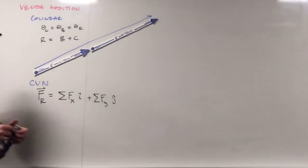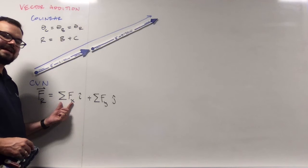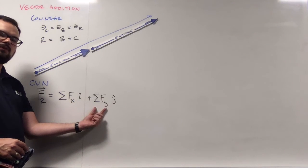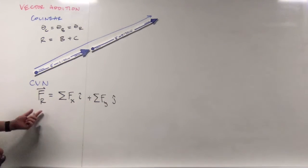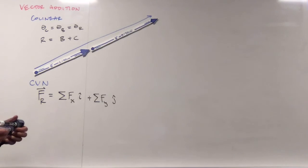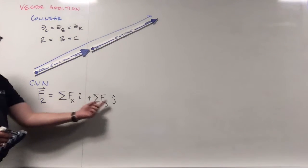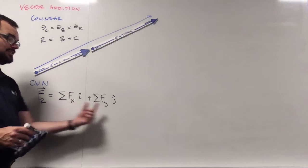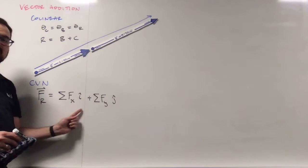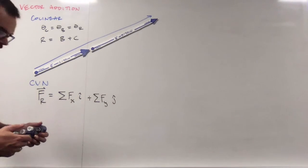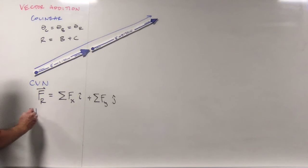And so if we have a collection of all the x terms, we can just add them all up, and then a collection of all the y terms, we can add them all up, and we'll get our overall resultant force. And we can see that we can't actually add these two numbers together because they point in different directions.